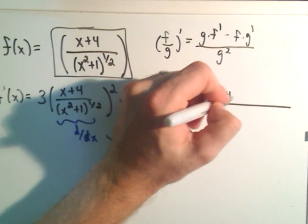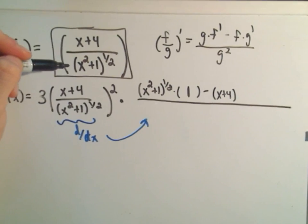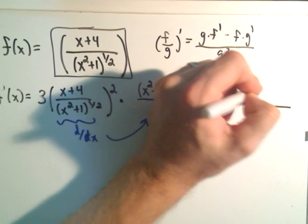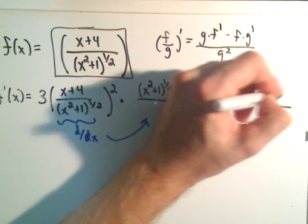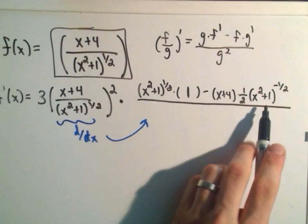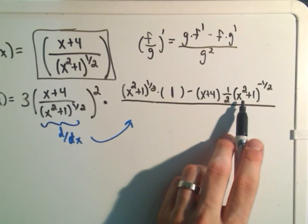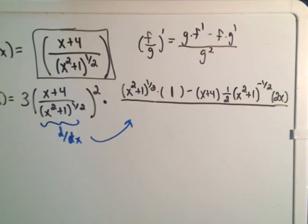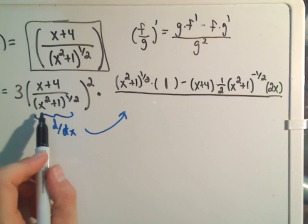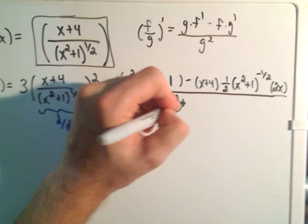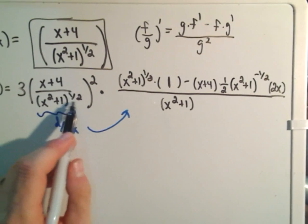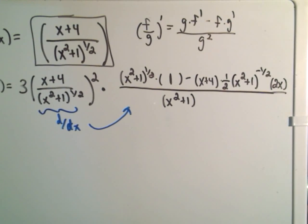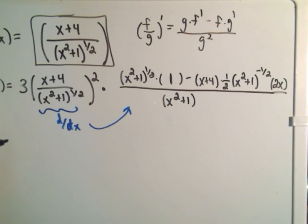Minus the top which is x plus four and then the derivative of the bottom will actually have to use the chain rule on that. So the one-half will come out front, we'll leave the inside alone and we'll take one away to get to the negative one-half. And now we have to multiply by the derivative of the inside of that so we'll pick up another 2x factor. And it says we get all of that over the bottom squared. And the denominator was a square root, so if we square it we'll just get x squared plus one to the first power.